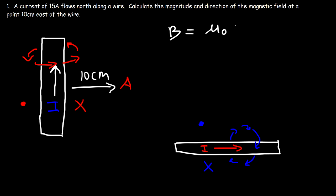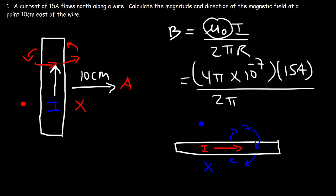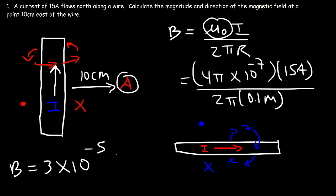Now let's calculate the magnitude of the magnetic field. The formula we need is B = μ₀I / 2πr. Plugging in: μ₀ is 4π × 10⁻⁷, the current I is 15 amps, and r is 10 centimeters, which is 0.1 meters.